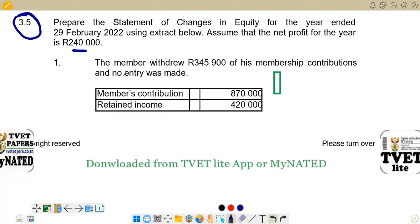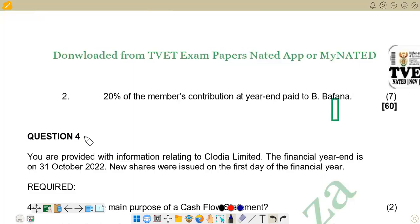On the first piece of information, the member withdrew 345,900 rand of his membership contributions and no entry was made. We are given the member's contribution of 870,000 and the retained income of 420,000. Then on item 2, 20% of the member's contribution is to be paid to Ebafana.